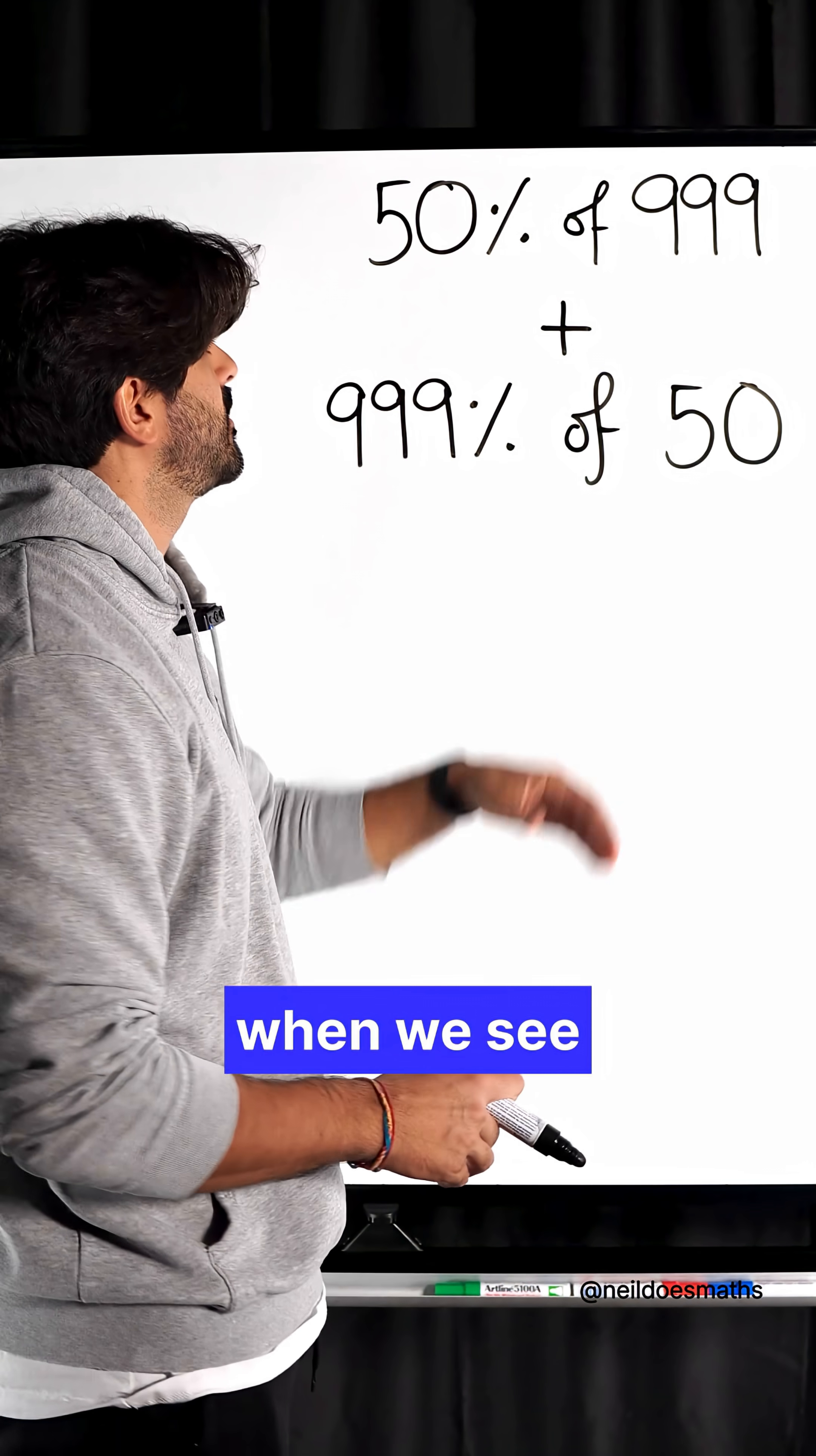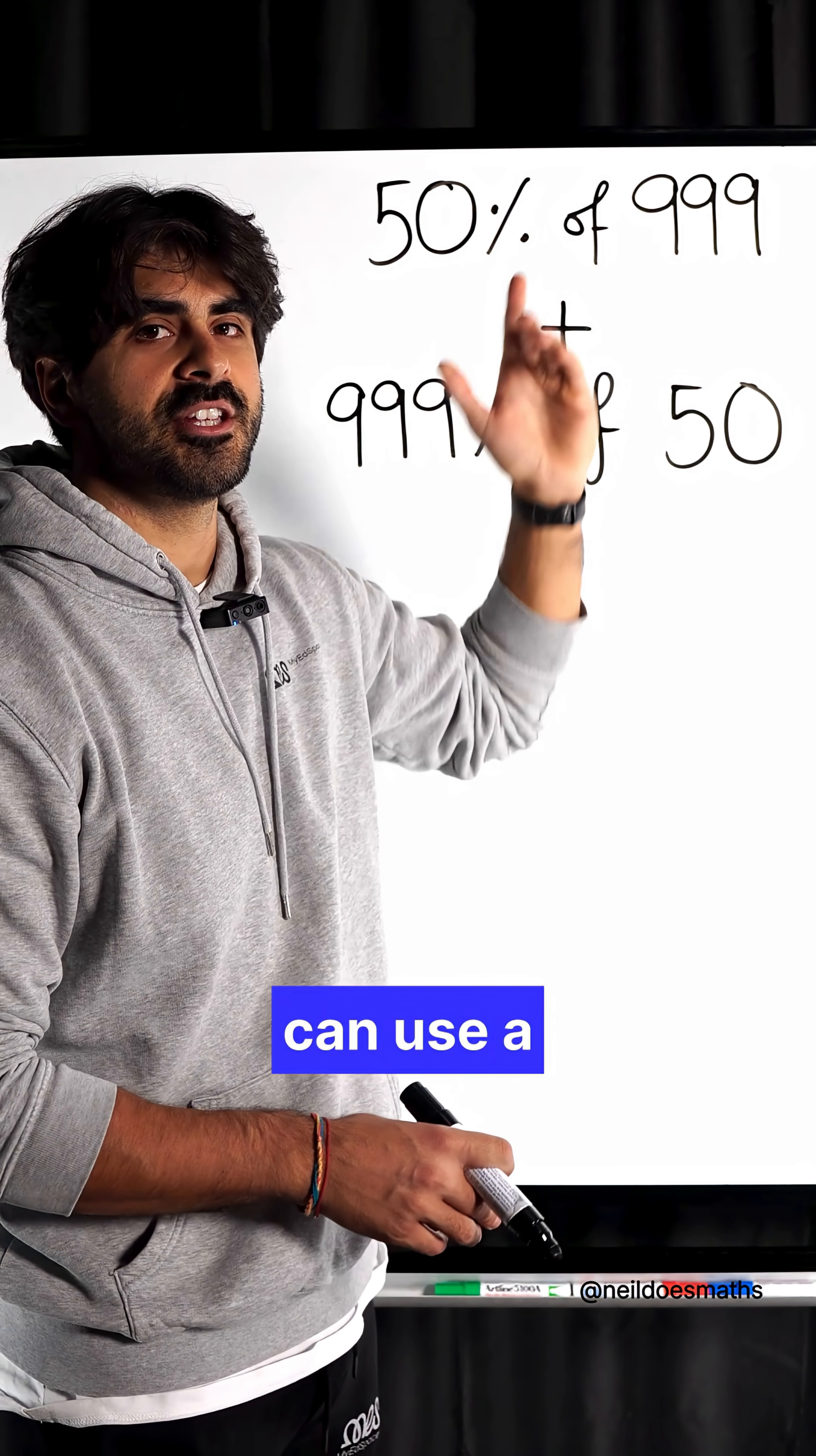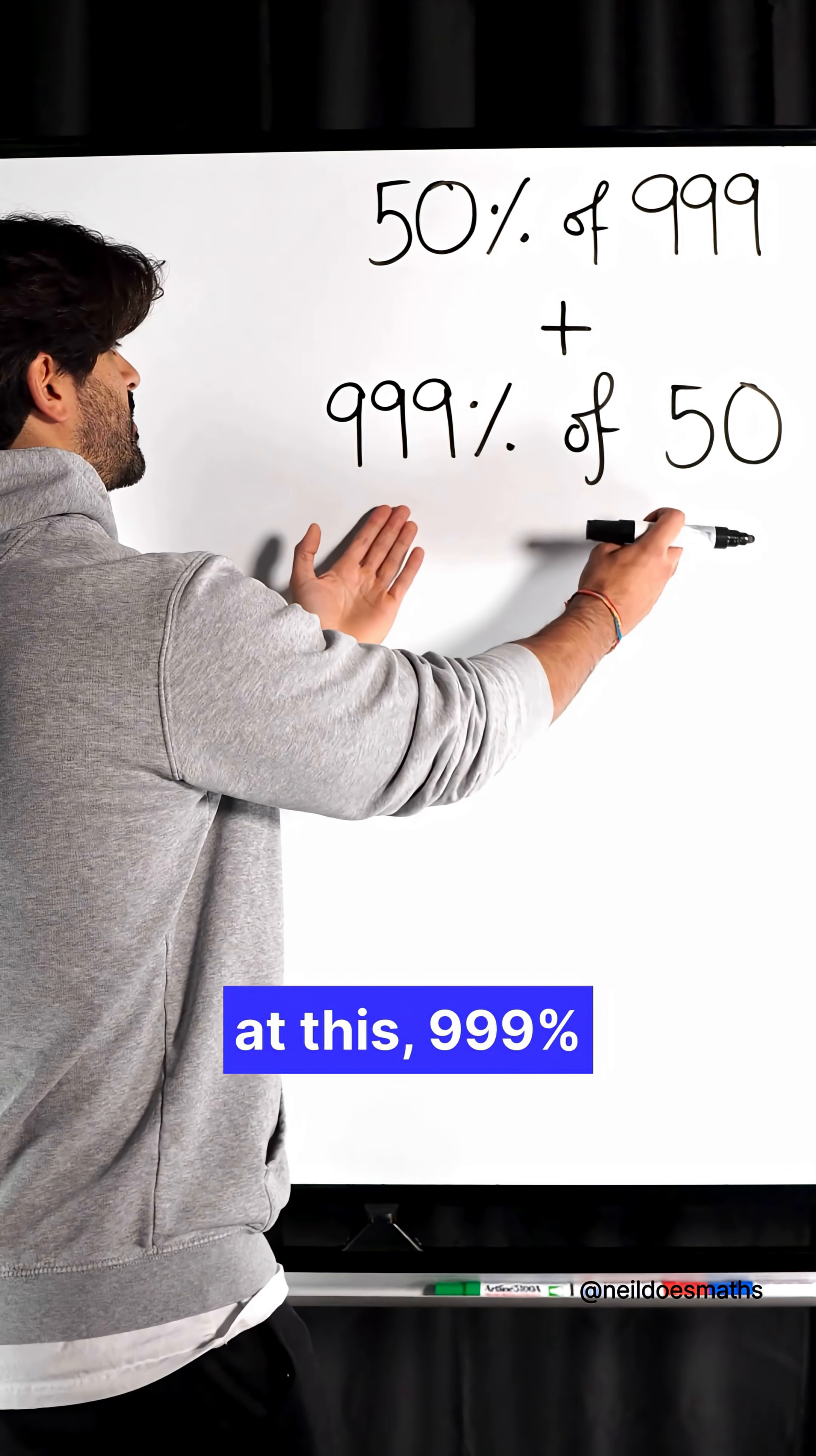Now, in mathematics, when we see the word 'of,' it just means multiplication. So when I'm doing 50% multiplied by 999, I can use the commutative property, meaning 2 times 1 is the same as 1 times 2.